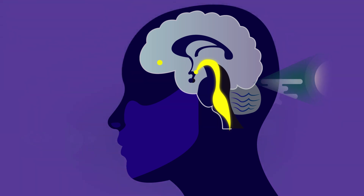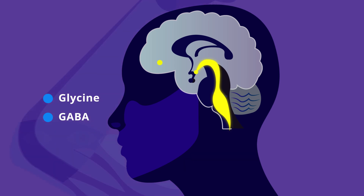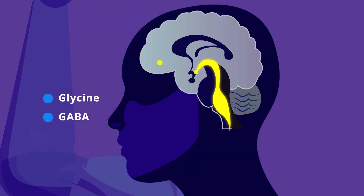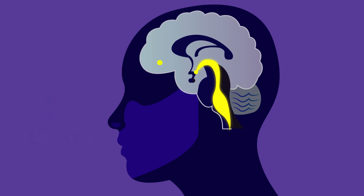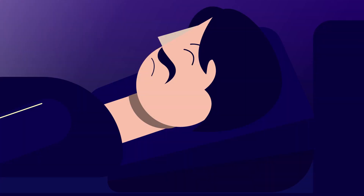The brain also secretes glycine and GABA, which puts your body into a temporary state of paralysis. The REM paralysis affects all the body muscles except the eye and respiratory muscles. The purpose of REM paralysis is to prevent you from acting out your dreams.